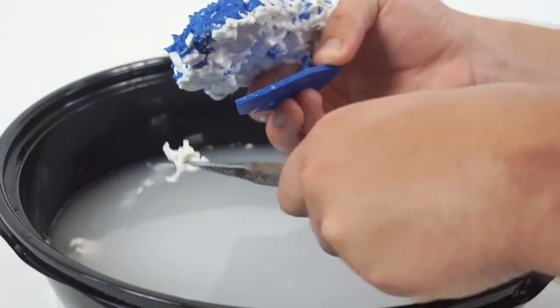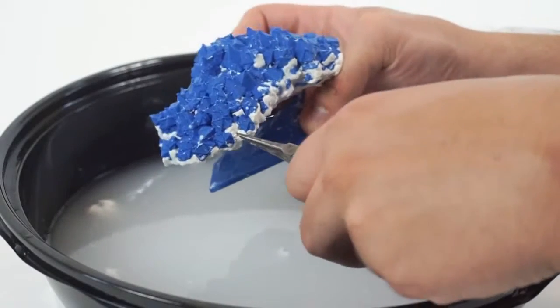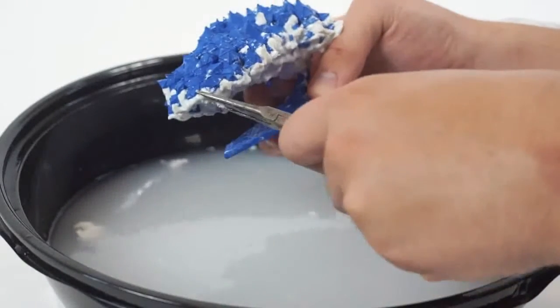Once the supports are soft and spongy, use the pliers provided in the toolbox to pull the supports from the print.